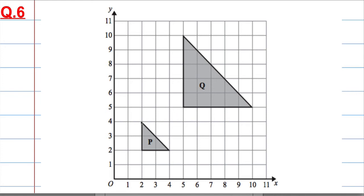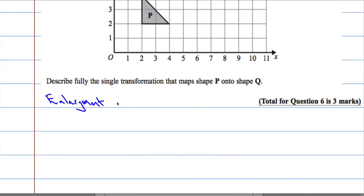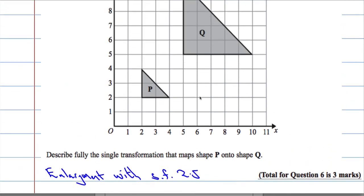Let's check the height. The height was 2. That is also 2, 4, 5, so that's 2 and a half. So yeah, it's a scale factor of 2.5. Enlargement with scale factor 2.5.